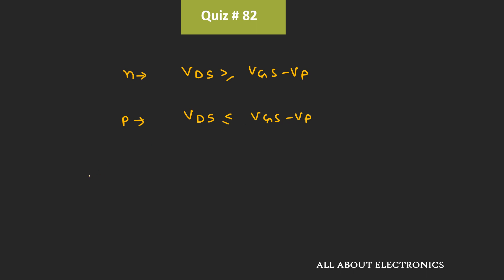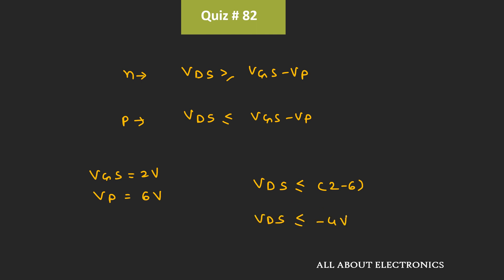Here, this Vgs is equal to 2V, while the Vp is equal to 6V. That means whenever this Vds is less than or equal to 2 minus 6V, or in other words, whenever this Vds is less than or equal to -4V, at that time the p-channel JFET will operate in the saturation region.